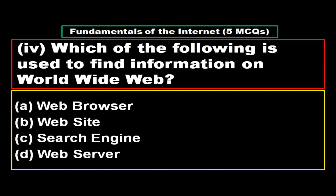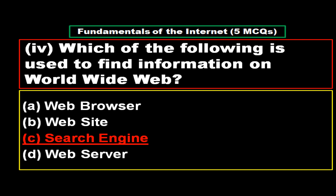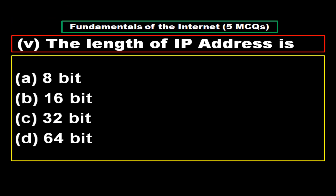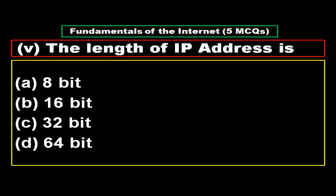Question 4: Which of the following is used to find information on the World Wide Web? Option A: web browser, option B: website, option C: search engine, option D: web server. The right answer is option C, search engine.